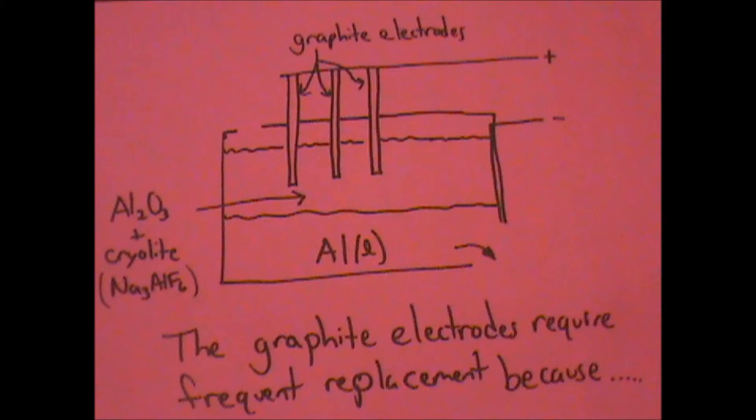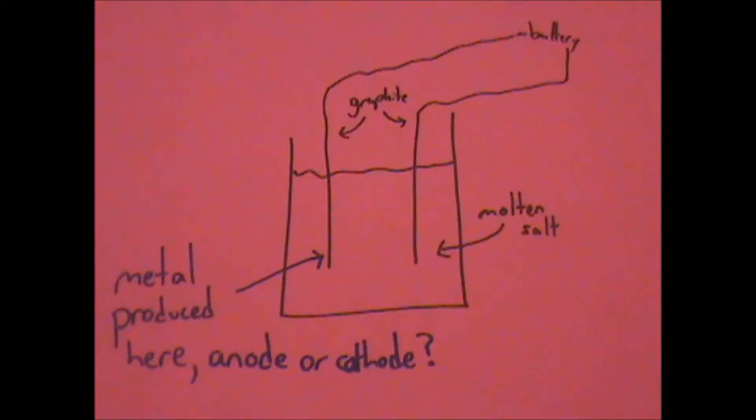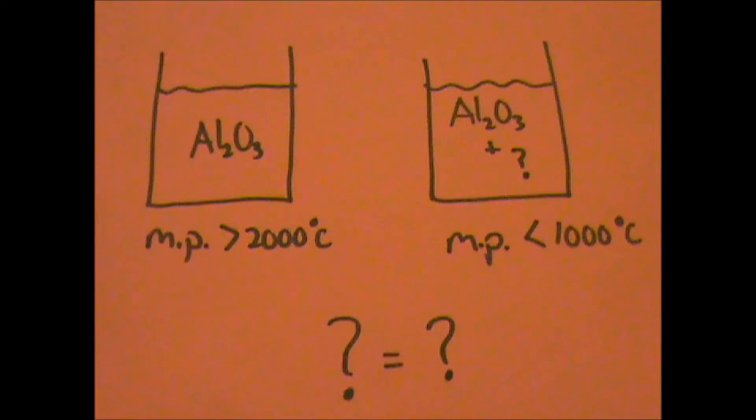The oxygen produced reacts with the graphite. Homogeneous. Cathode. ICP-OES. Cryolite Na3AlF6.